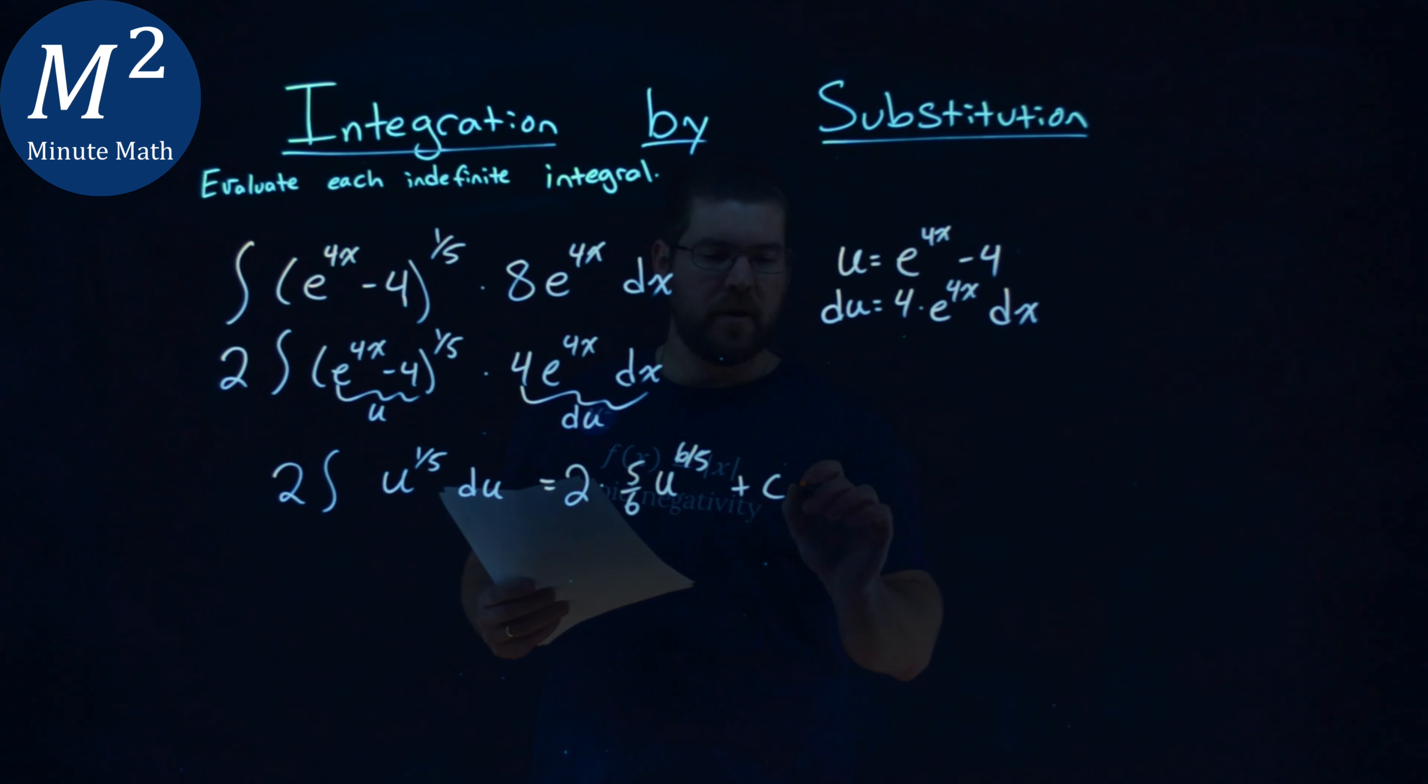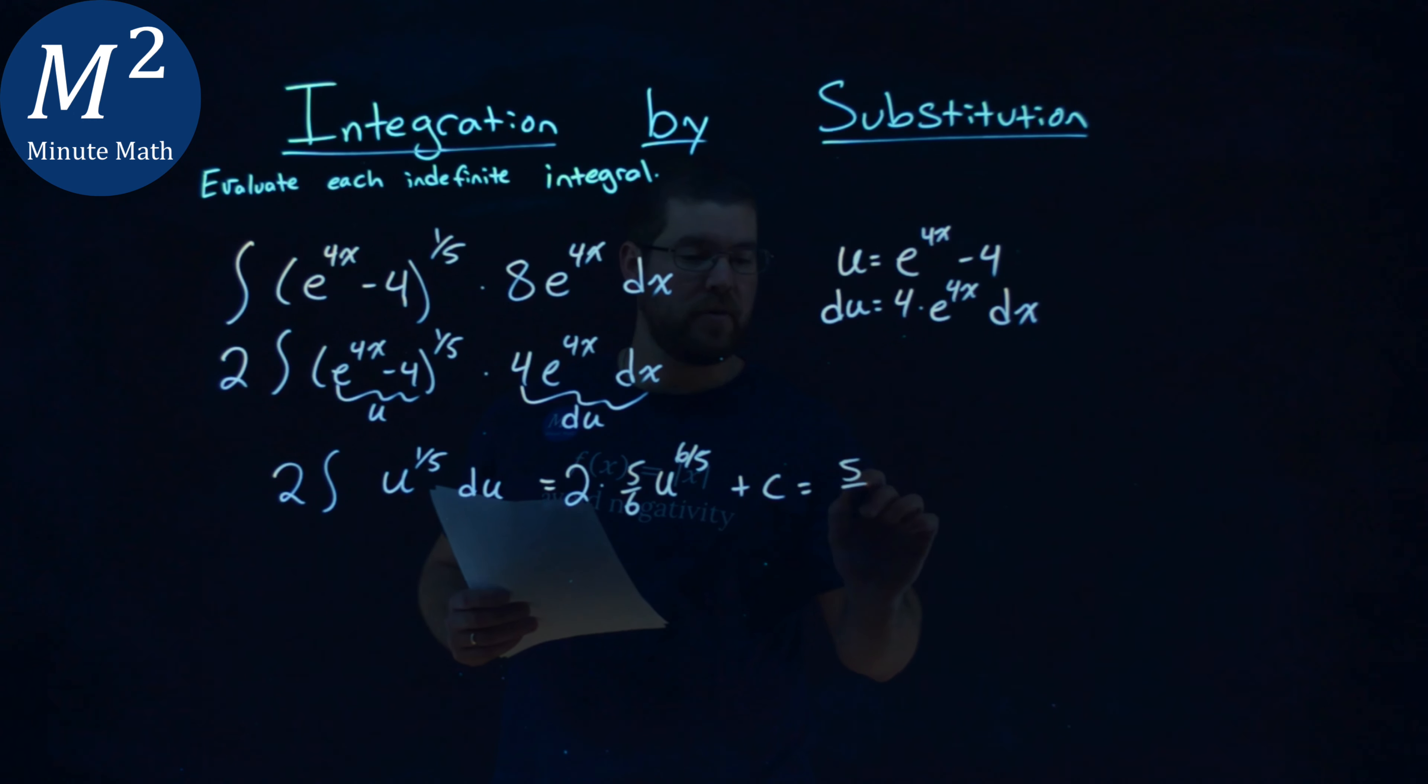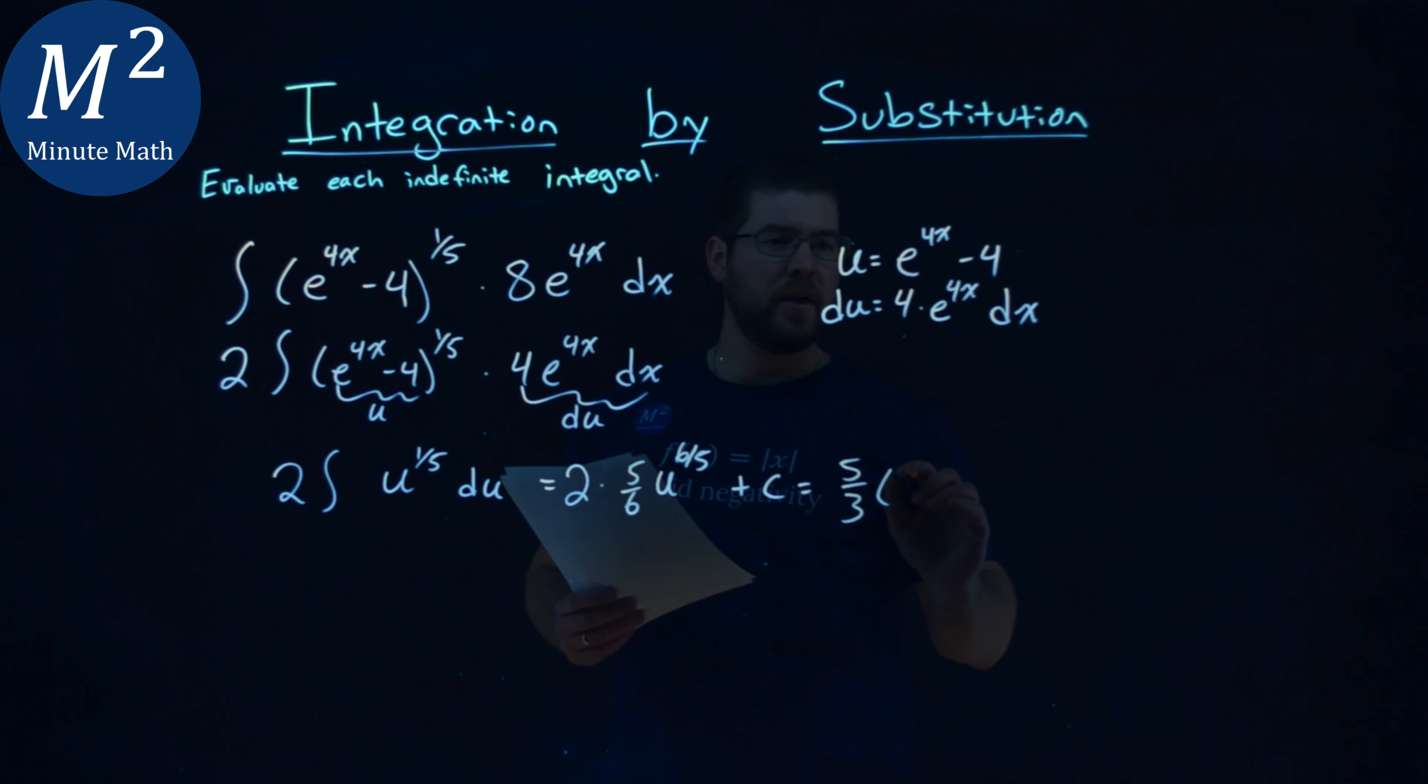From there, we keep on going. Now let's go simplify. 2 and 6 cancel out to be a 3 in the denominator. So we have 5/3rds here. And then instead of a u, we can plug in our u value in. e to the 4x minus 4 here, all to the 6/5th power plus c.